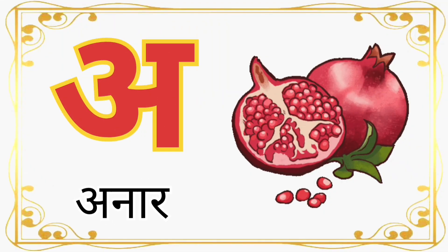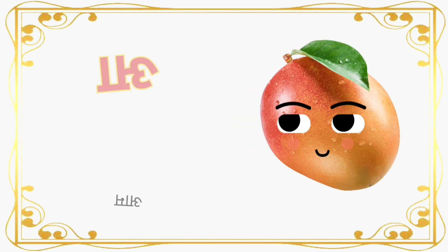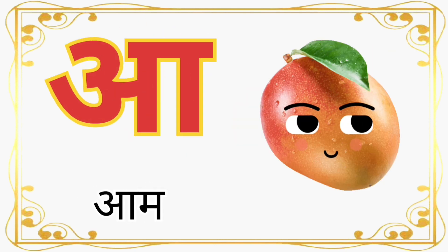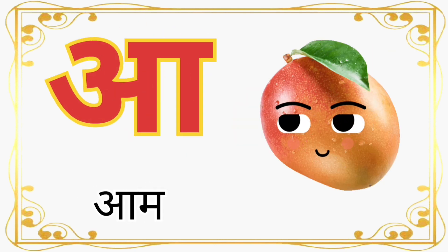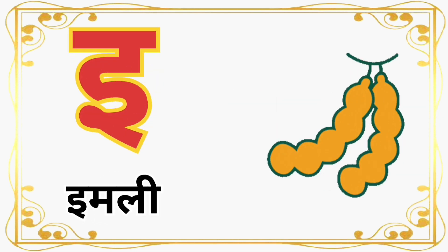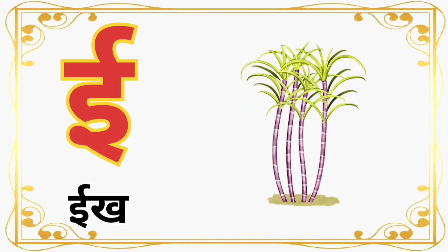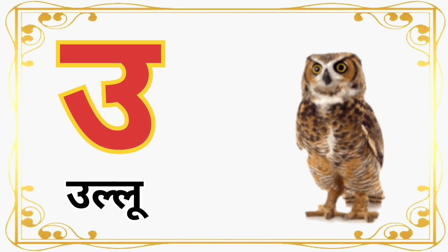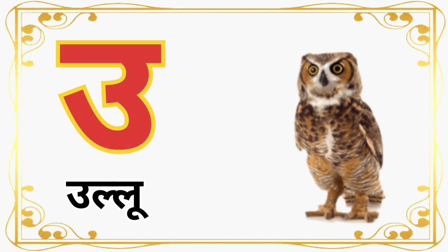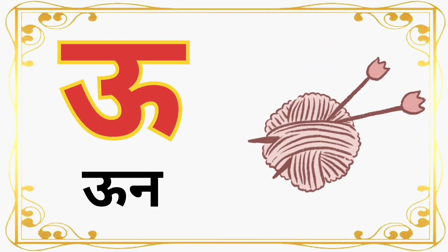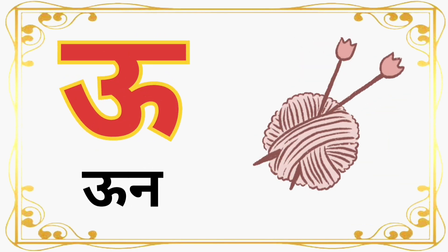Chhota A se Anar (short A for pomegranate). Bada A se Aam (long A for mango). Chhoti I se Imli (short I for tamarind). Badi I se Eek (long I). Chhota U se Ullu (short U for owl). Bada U se Uon (long U).